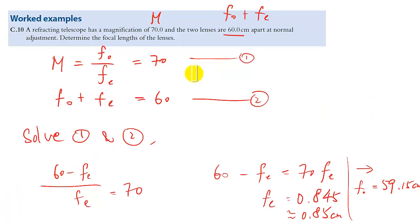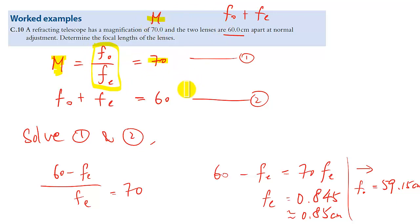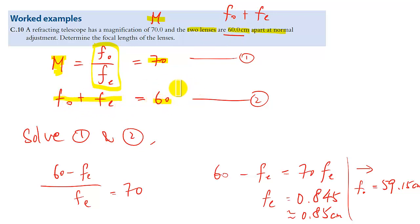There are basically two usual equations you will use: one is angular magnification — as mentioned by the question — so I put down M equals 70. At the same time, the question says the two lenses are 60 cm apart, which means F_o plus F_e equals 60. When you solve this by algebra, you should find the answers for both focal lengths.